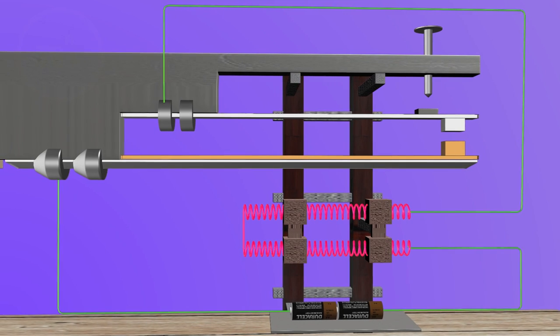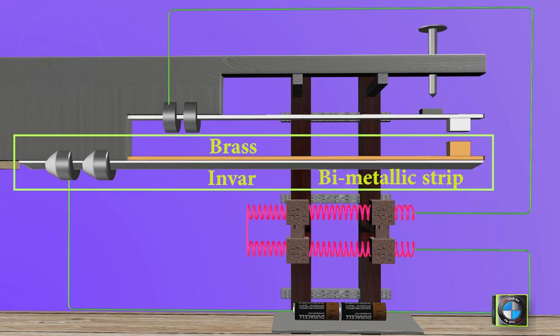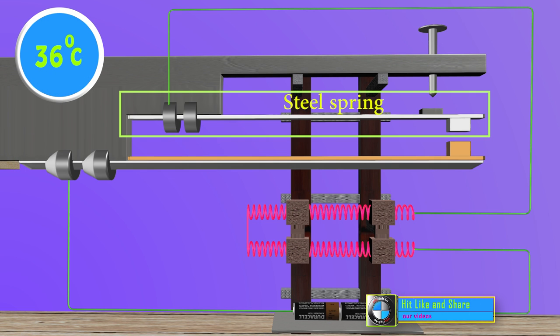Let us learn about different parts of the thermostat. This is the bimetallic strip. A brass and inverse strips are firmly held together. A steel spring is kept parallel with the bimetallic strip.